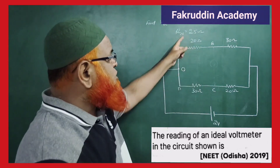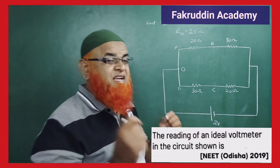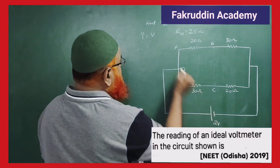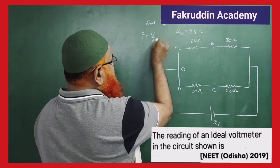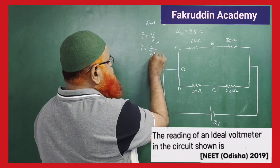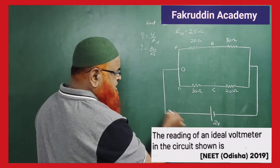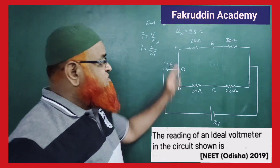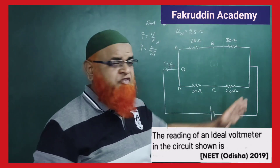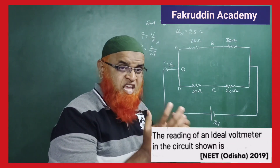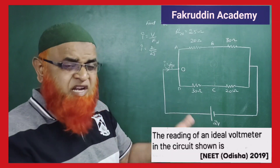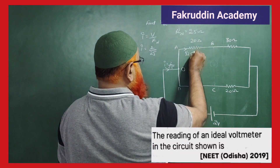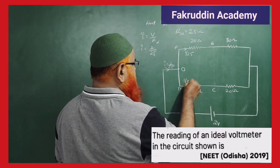Now you can find the net current. The net current I is nothing but the voltage divided by the net resistance, so I = 2/25 amperes. Since both parallel branches have the same resistance of 50 ohms each, the current is going to be divided equally between them.